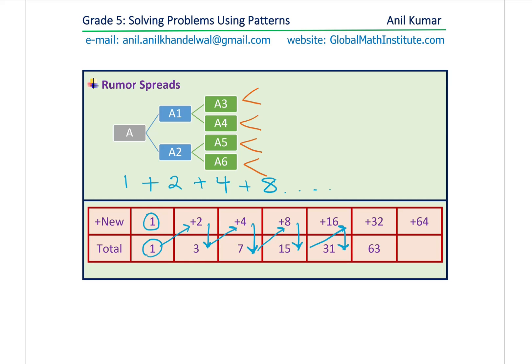Initially one person knows, then he informs two, so we have one plus two as three. Now these two inform two more — that means two times two which is four — and four plus three gives you seven. Then these four people have informed two each, so eight more people have joined, giving us seven plus eight as 15. Then eight doubles up to 16, and likewise it is growing.